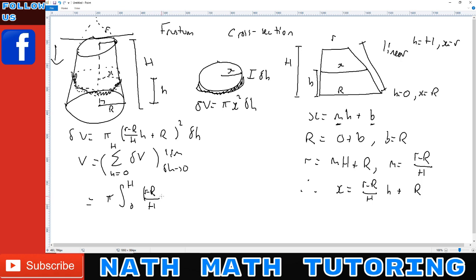The integral is ((r - R)/H times h + R)² dh. We're integrating in terms of just h here; everything else is a constant. If you remember how to integrate a linear function, we raise the power by one, divide by the new power and the derivative of the inside, between big H and zero.